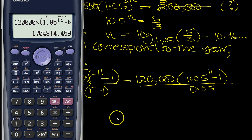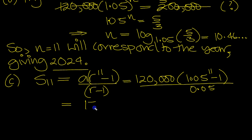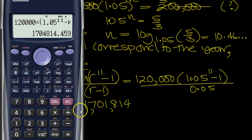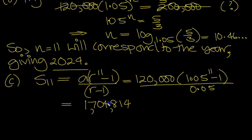1,704,814.459. 1,704,814 to the nearest pound. 1,701,814. Let's just double check if I've written that down correctly. 1,704,814. And it was that to the nearest pound.